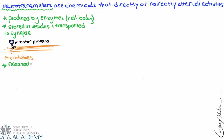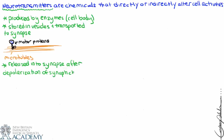The motor proteins move the vesicles down to the synapse where they wait, and if there happens to be an action potential, they can be released into the synapse. Neurotransmitters are released after depolarization of the synaptic knob — we know that means we have influx of calcium and then exocytosis of those neurotransmitters.